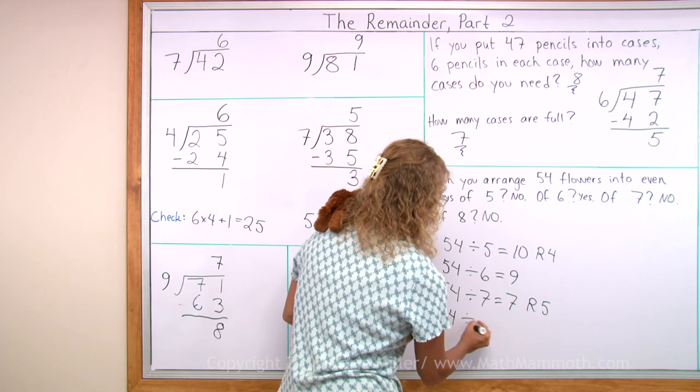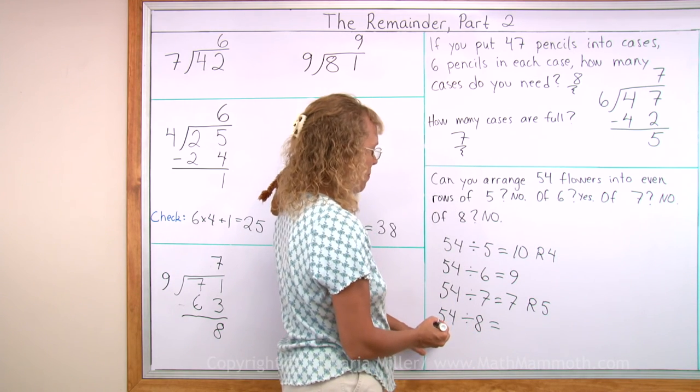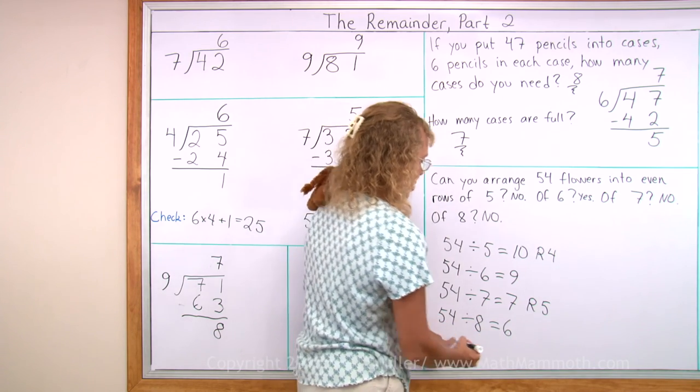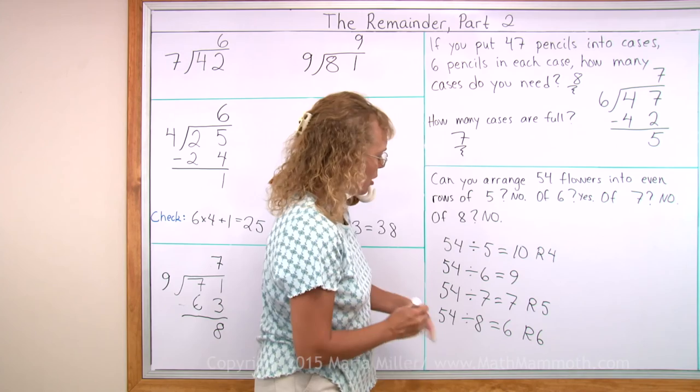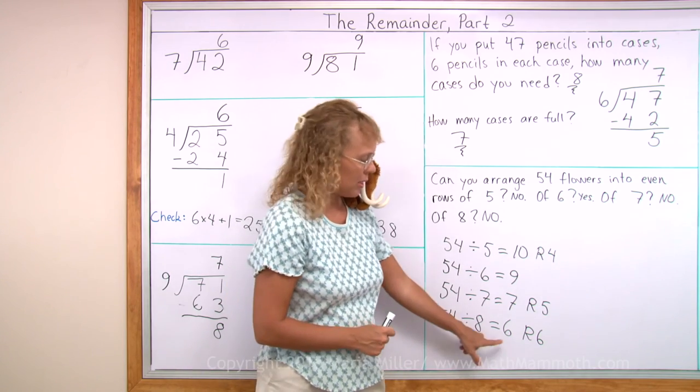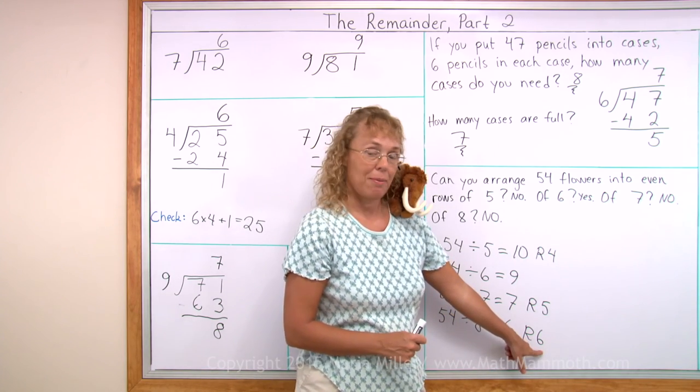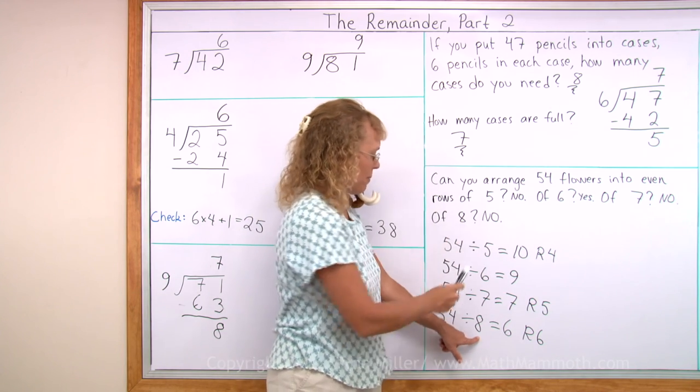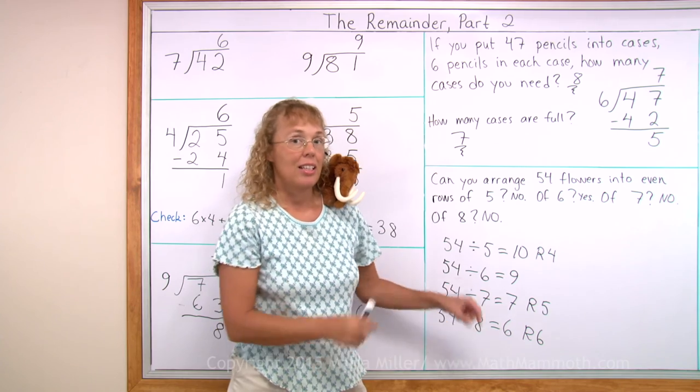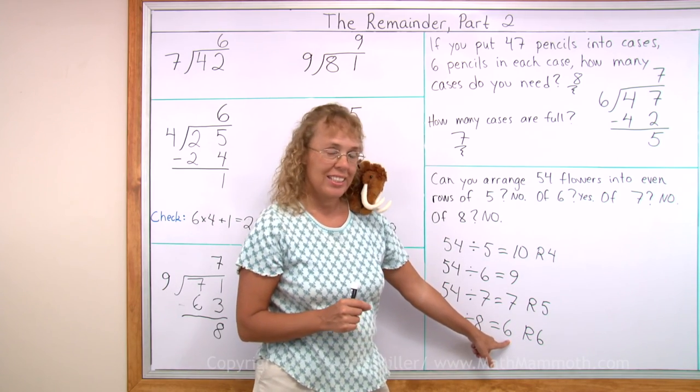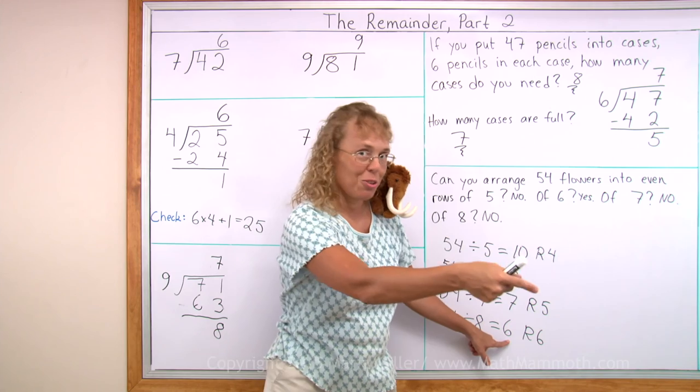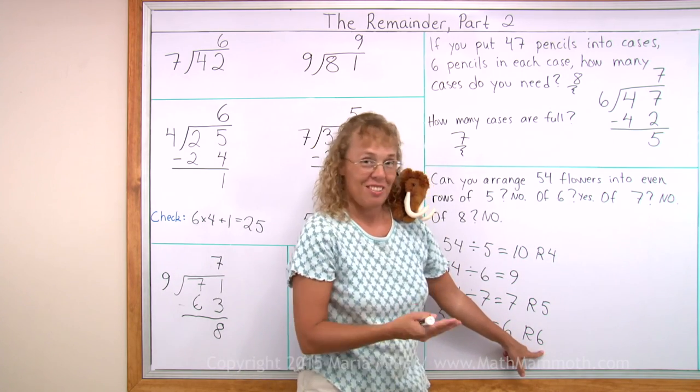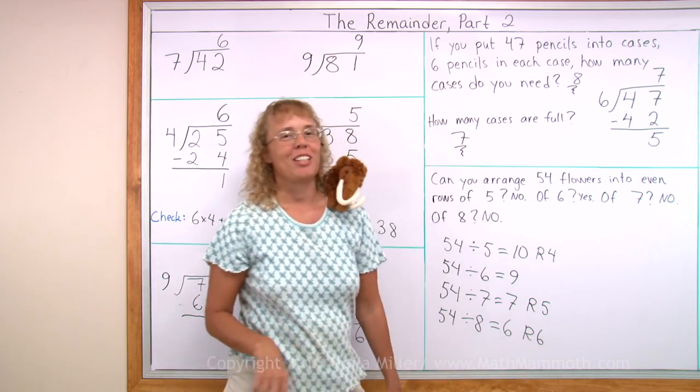And then lastly 54 divided by 8. 8 goes into 54 6 times. 6 times 8 is 48, so the remainder is 6. And now do you understand what this 8 means? What does this 6 mean? We were asked about even rows of 8. It means 8 flowers in each row. This 6 means 6 rows. 6 rows of 8 flowers each. And these are the leftover flowers. Okay, we're all done with this lesson.